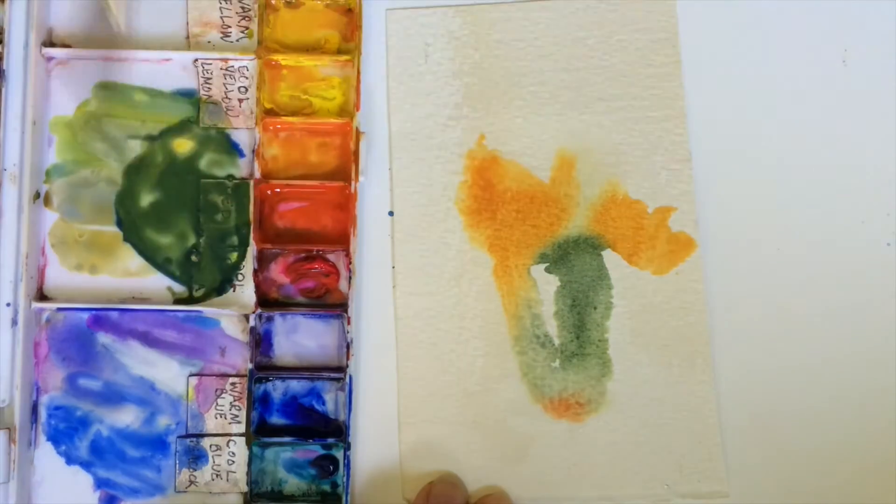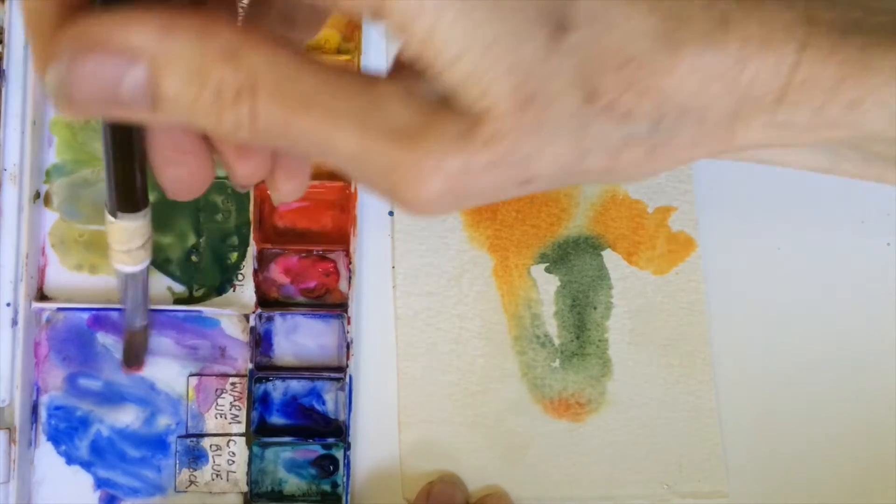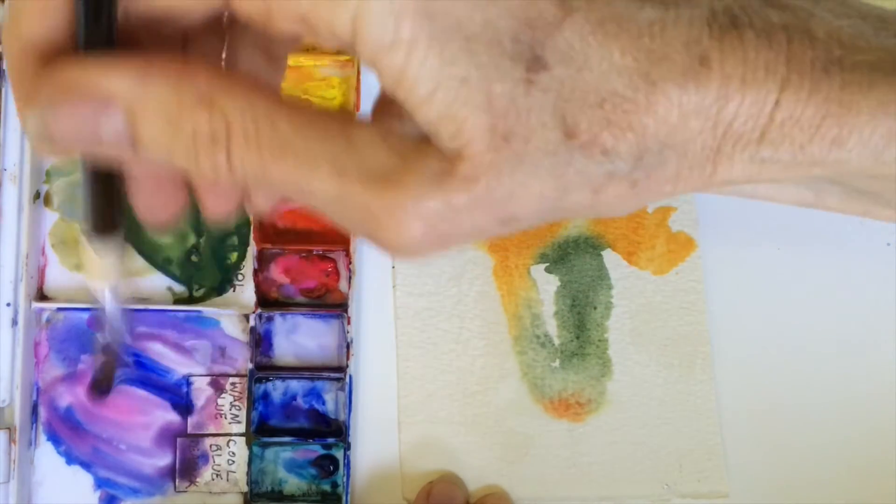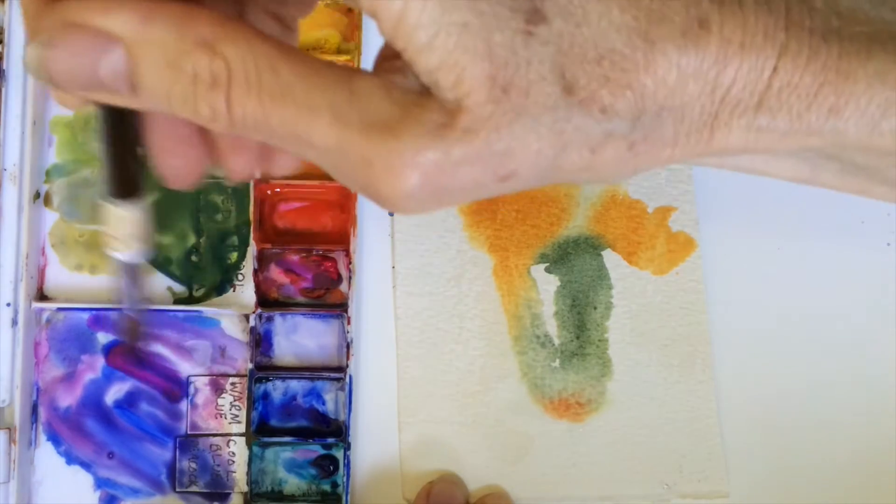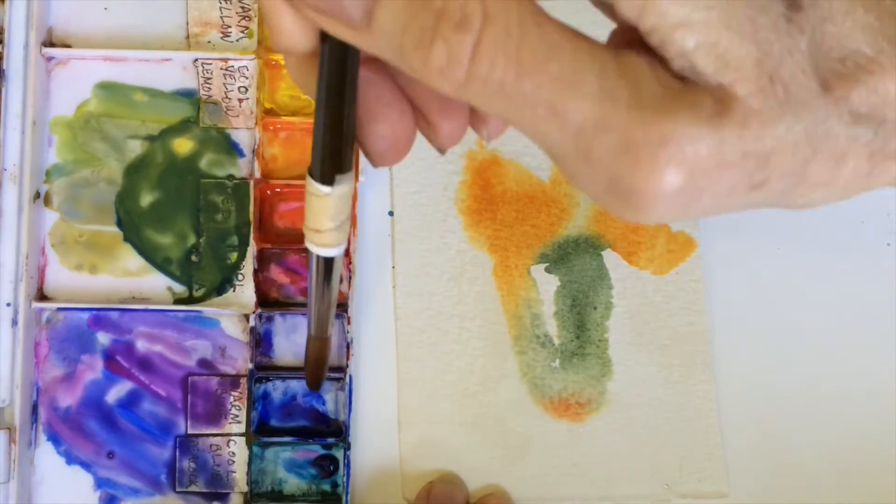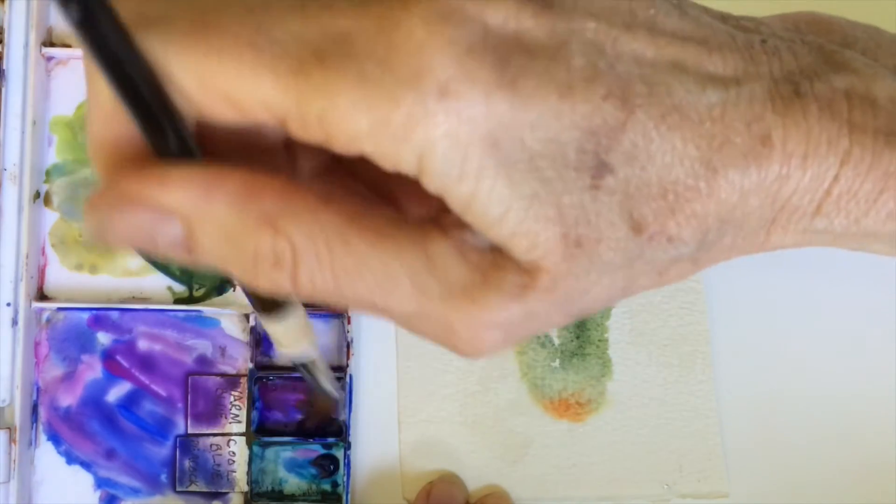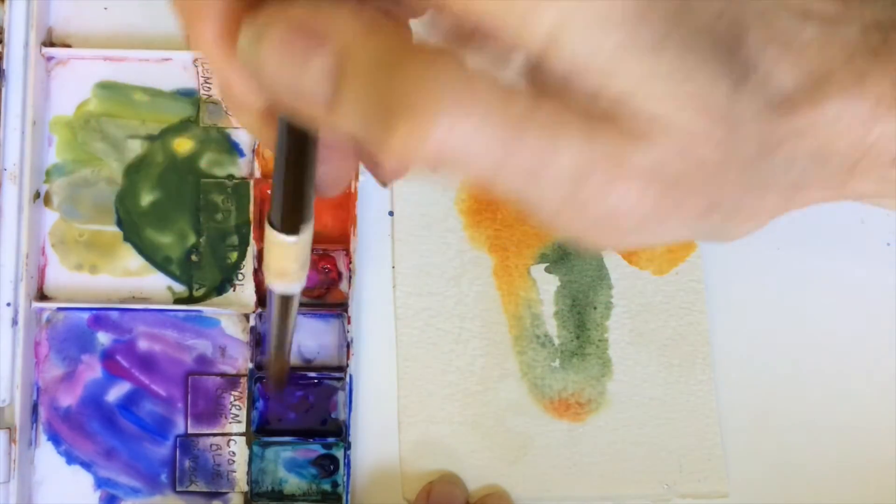Keeping it very simple. I'm going to make a purple just so I have a darker color. The thing to do is get a high concentration of pigment, not too much water.